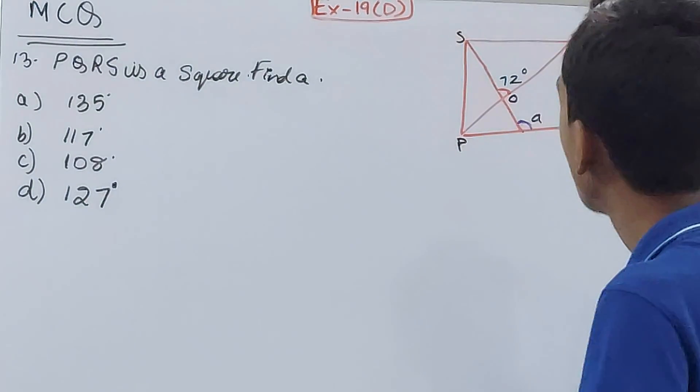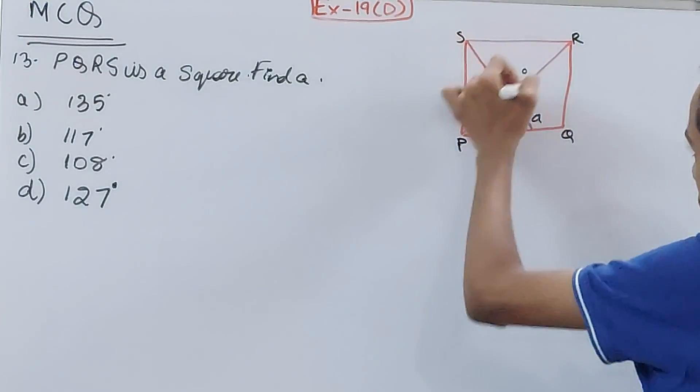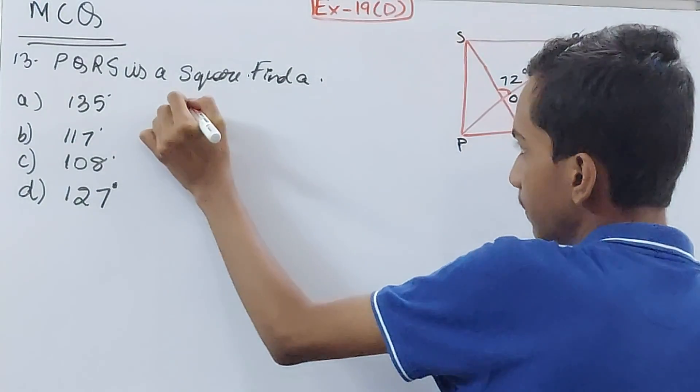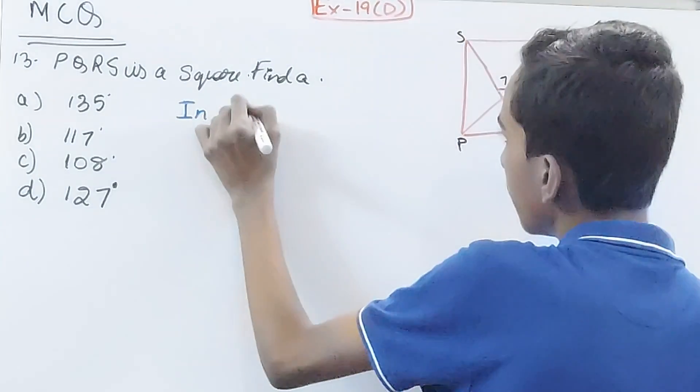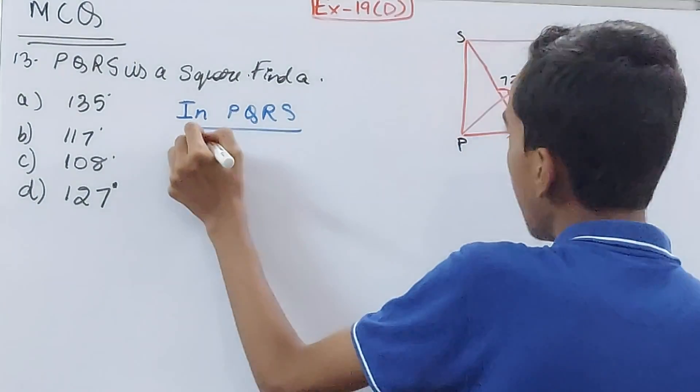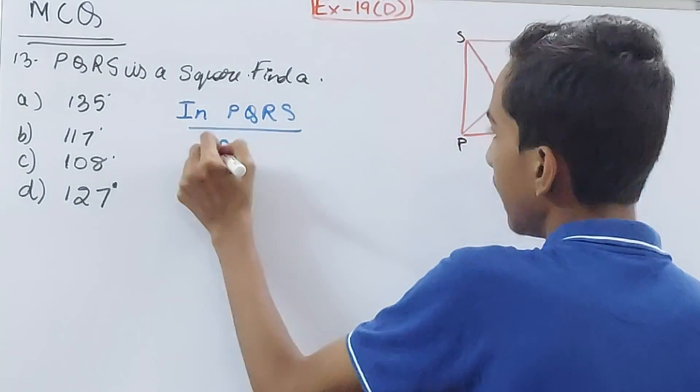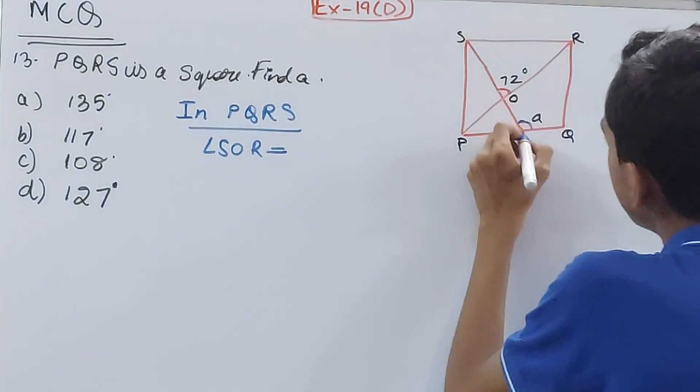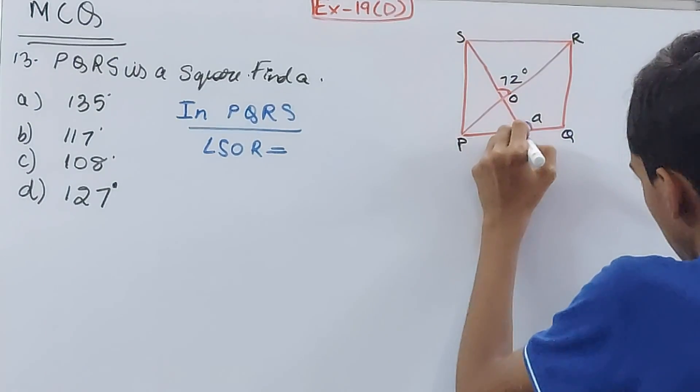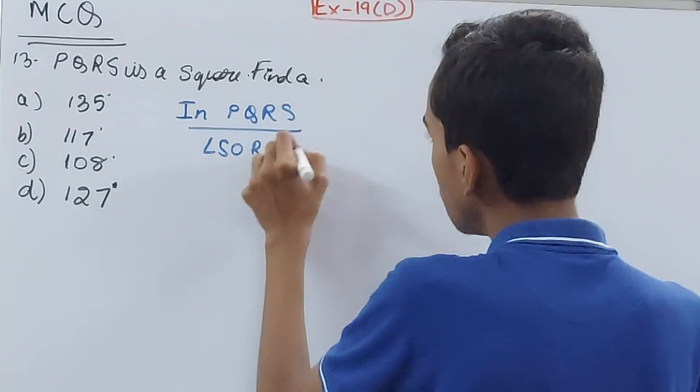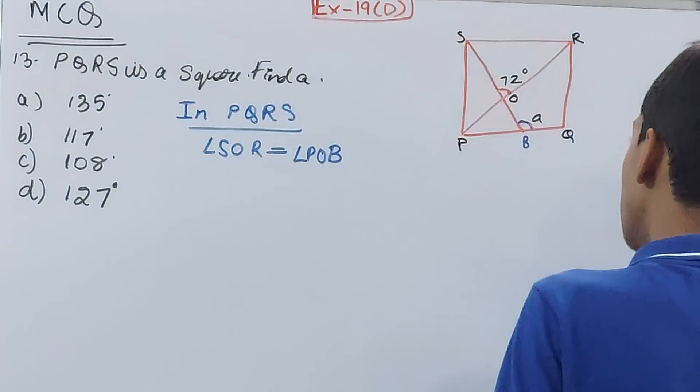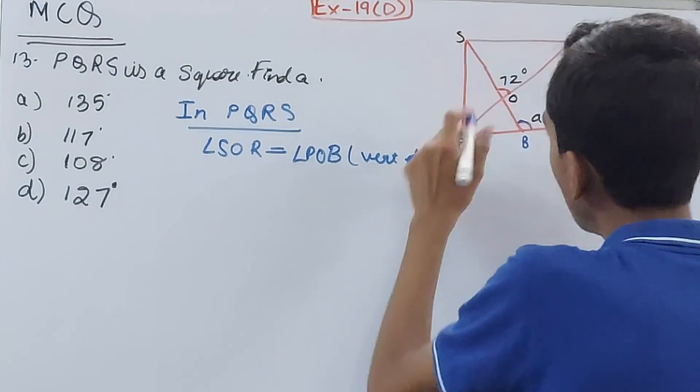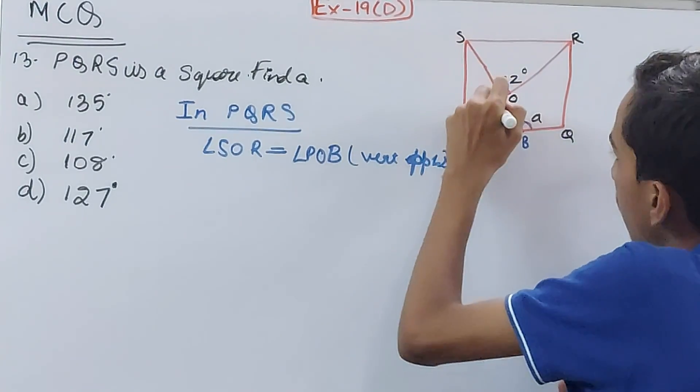So what can we say? Look, angle SOR is 72 degrees. That is given to you. So in PQRS, we will have angle SOR equal to POB. Since no point is given, let's give this point a name. Let's say B. Angle SOR is equal to angle POB. What reason? Vertically opposite angles.